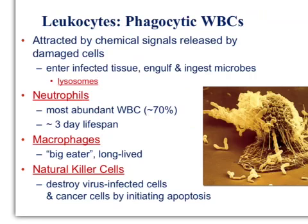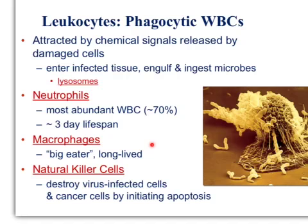Leukocytes are phagocytic white blood cells attracted by chemical signals released by damaged cells. When cells get damaged, they release chemical signals alerting leukocytes that something's not right, and those leukocytes move through infected tissue to engulf and ingest microbes. The most abundant form — about 70% of our immune cells — are neutrophils, which live for about three days. Then we have macrophages, which are huge and live much longer. Natural killer cells specifically destroy virus-infected cells and cancer cells by initiating apoptosis.